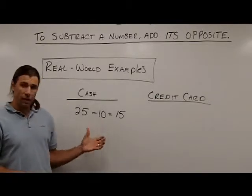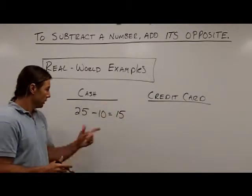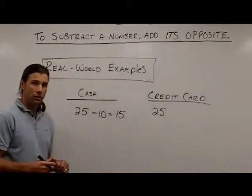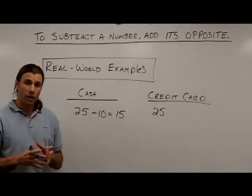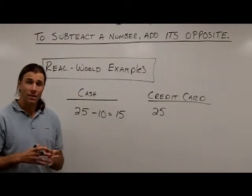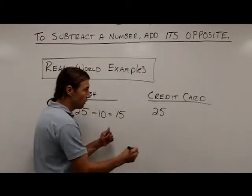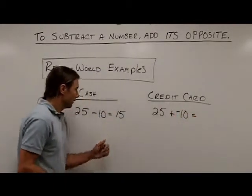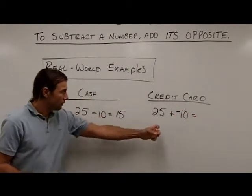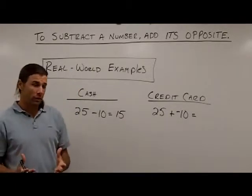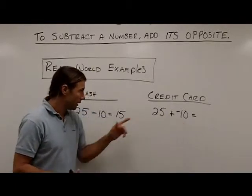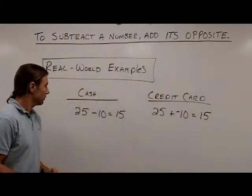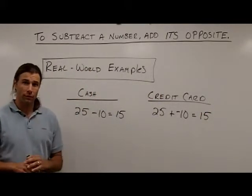Now let's say instead of paying with cash, I'm actually going to pay with a credit card. I go to the store with the same net worth of $25. What I'm actually doing by paying with a credit card is adding debt to my net worth — I'm charging $10 on my credit card. Regardless of how I write this, I'm still going to have the same net worth in the end. Once I go and pay my credit card off, I'm still going to be worth $15.